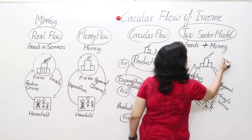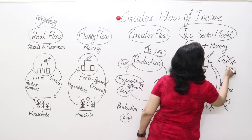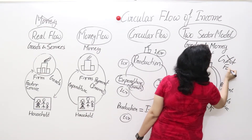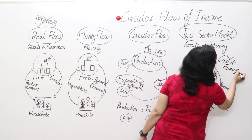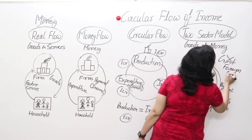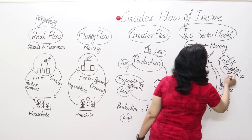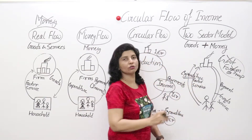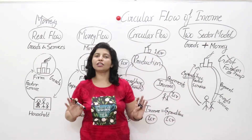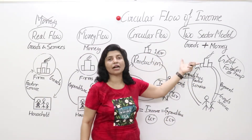In the two sector model, there is no government and no foreign nation — no exports or imports. We have only firms and households — only two sectors in the economy. This is known as the two sector model.